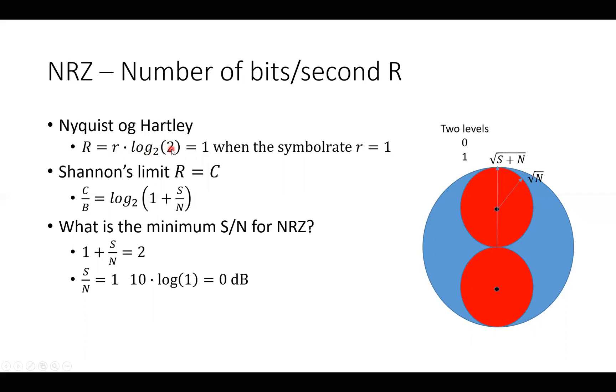We have plus voltage and minus voltage. That means two levels. And that equals to 1 if we choose to make the symbol rate equals to 1 symbol per second. In Shannon's limit, then you have R is equal to C.